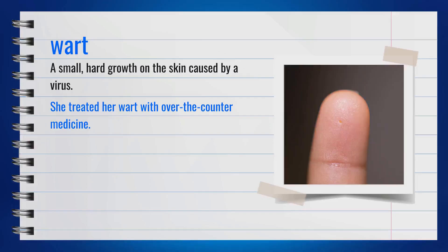The word wart, spelled W-A-R-T, is a small hard growth on the skin caused by a virus. Synonyms include growth and nodule. For example, she treated her wart with over-the-counter medicine. In summary, a wart is a growth on the skin caused by a virus.